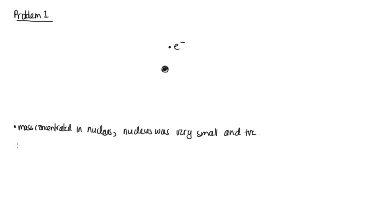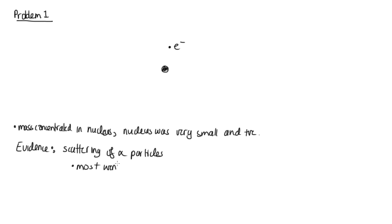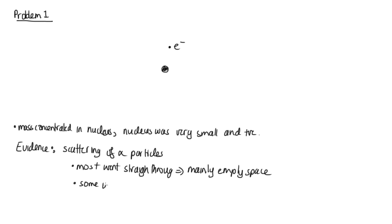The main evidence that he had was the scattering of alpha particles. He found most went straight through, which told him that it was mainly empty space. And some were deflected a lot.